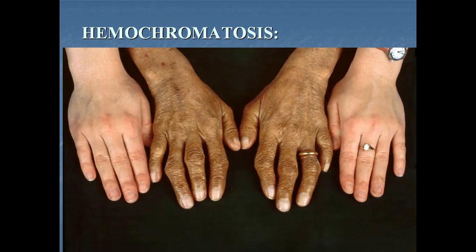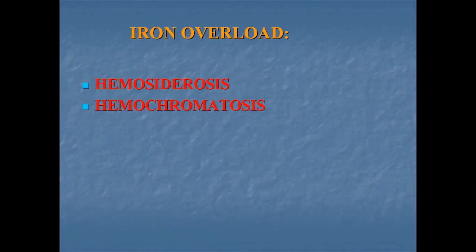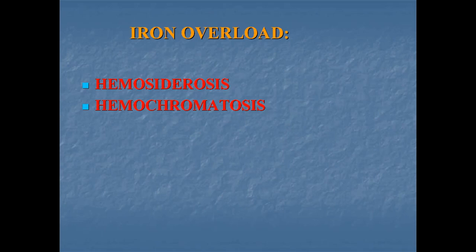In hemochromatosis, the skin becomes bronzed due to accumulation of iron and melanin. Bronzed skin along with diabetes mellitus gives this disease another name: bronzed diabetes. The cause of hemochromatosis may be genetic (primary) or acquired (secondary). Primary or genetic hemochromatosis is a hereditary disorder due to an unregulated increase in the intestinal absorption of iron from a normal diet. Patients with hemochromatosis absorb about 4 mg of iron per day rather than 1 mg from the gastrointestinal tract.